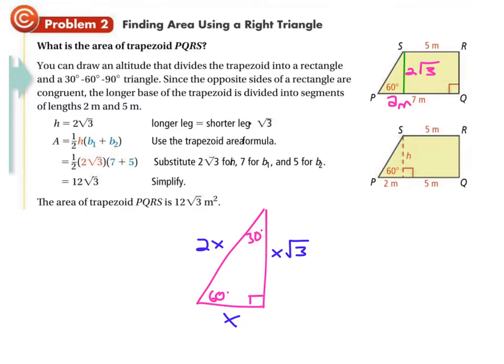So you plug them in. When you multiply that all out, you get 12 root 3 — one half of 2 root 3 is just root 3, so that's root 3 times 12, which is 12 root 3. The units were meters and it's an area, so it's meters squared.